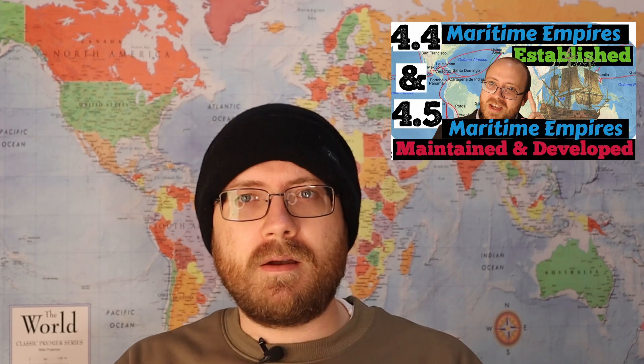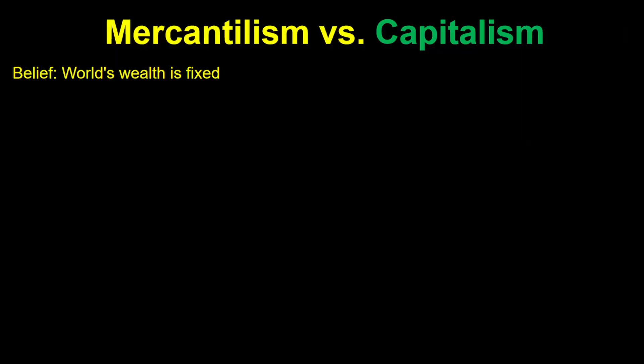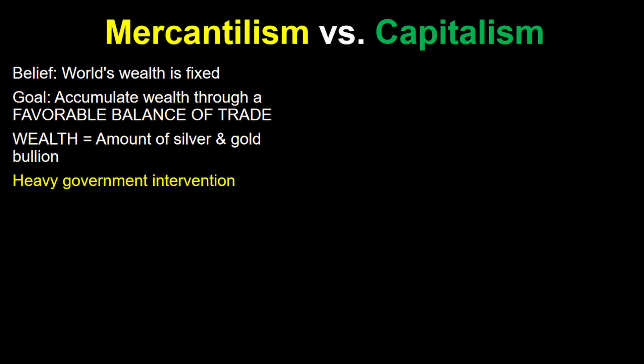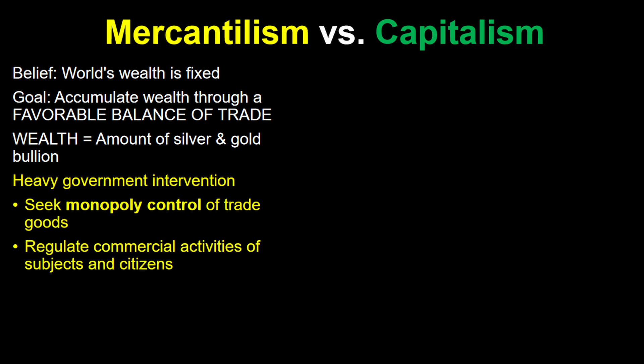We went over mercantilism in topic 4.5. Let's compare these two economic theories. In mercantilist theory, the amount of wealth in the world is fixed and the goal is for states to accumulate as much of that wealth as possible — a favorable balance of trade, which was measured by the amount of gold and silver bullion. Governments were heavily involved in this process, seeking monopoly control of trade goods and regulating the commercial activities of their subjects and citizens.